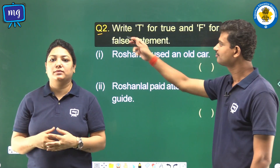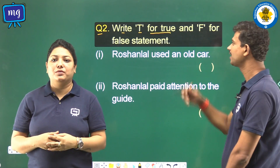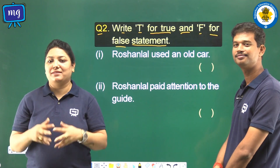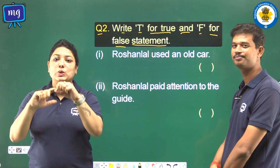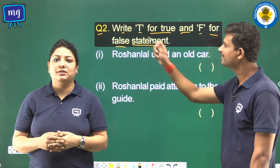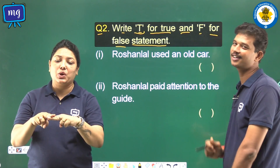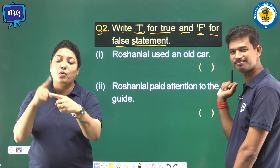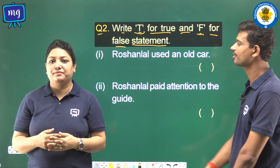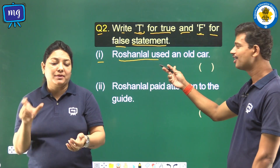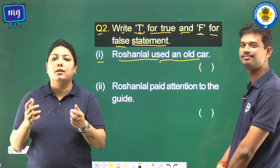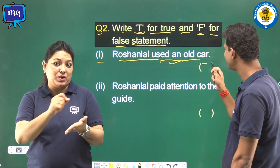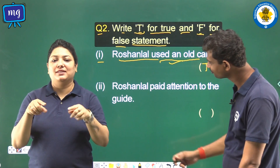Question 2: Write T for true and F for false statements. In this question, you have to write T if the sentence is correct or F for a wrong sentence. First: Rosenlal used an old car. Is it right? Yes, it is correct. So we shall write T in the blank bracket.